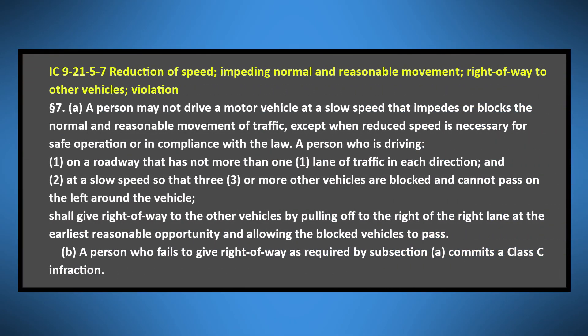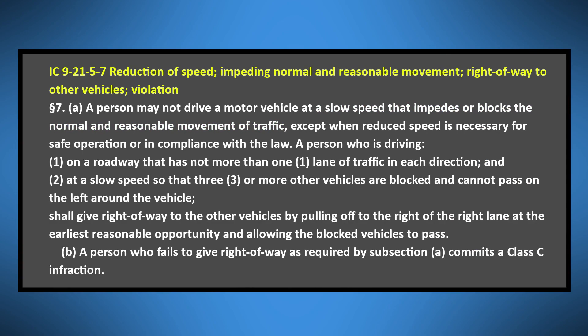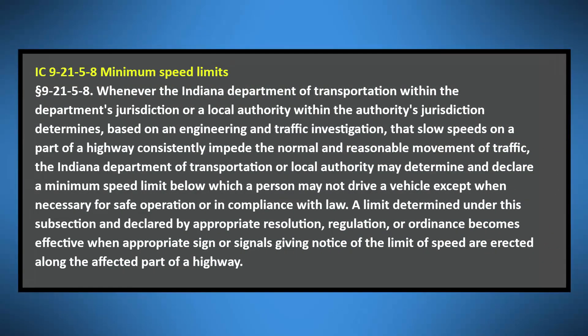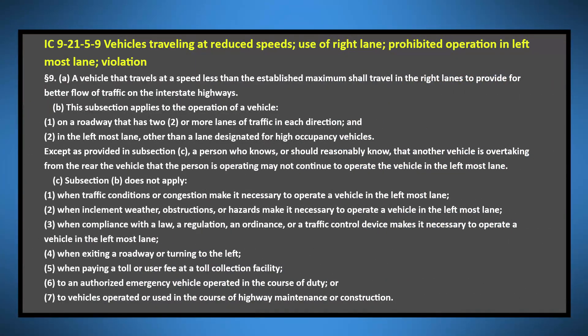Did you know that there are also laws against driving too slow? The key words in Section 7 are a slow speed that impedes or blocks the normal and reasonable movement of traffic. This doesn't apply when you're driving slower in response to poor conditions or emergency vehicles — it applies when you interfere with the normal flow of traffic. When three vehicles are stacked up behind you on a narrow or one-lane road, you have to move over as soon as you can to let them pass. Indiana also posts minimum speed limits, and slower moving vehicles like tractors and mopeds are prohibited where speeds of 40 miles per hour or greater are posted. On multi-lane highways, a vehicle traveling less than the established maximum can be ticketed if they're not in the rightmost lane when traffic is moving normally.